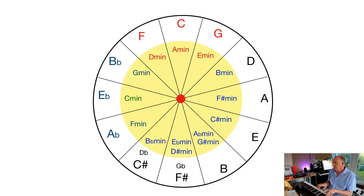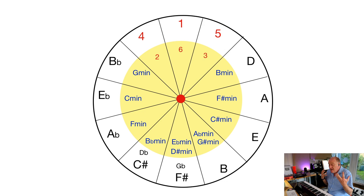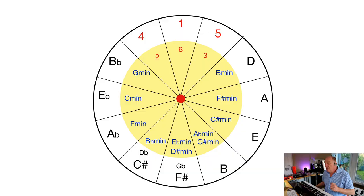Do those three chords up the top look remotely familiar? C, F, and G. Indeed, anybody who's tried to play songs on a guitar will know that chords one, four, and five are pretty much the centre of the universe. If you can play one, four, and five, you can play almost anything. Those are right next door to each other on the circle.